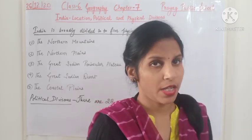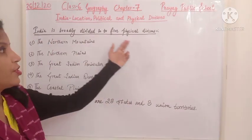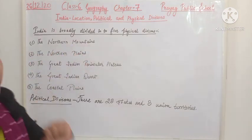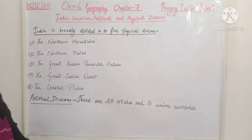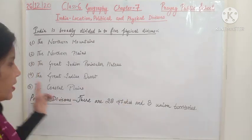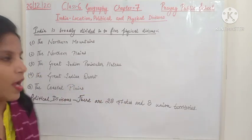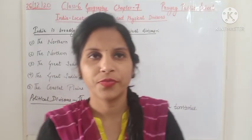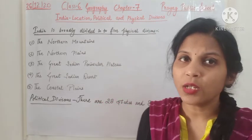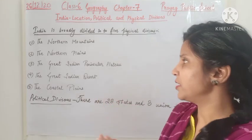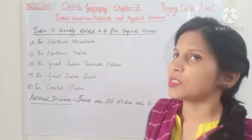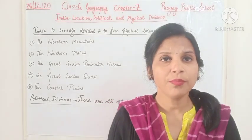There are five main physical divisions of India. The first is the Northern Mountains — that is the Himalayas. The second is the Northern Plains. The third is the Great Indian Peninsular Plateau. The fourth is the Great Indian Desert. And the fifth is the Coastal Plains.